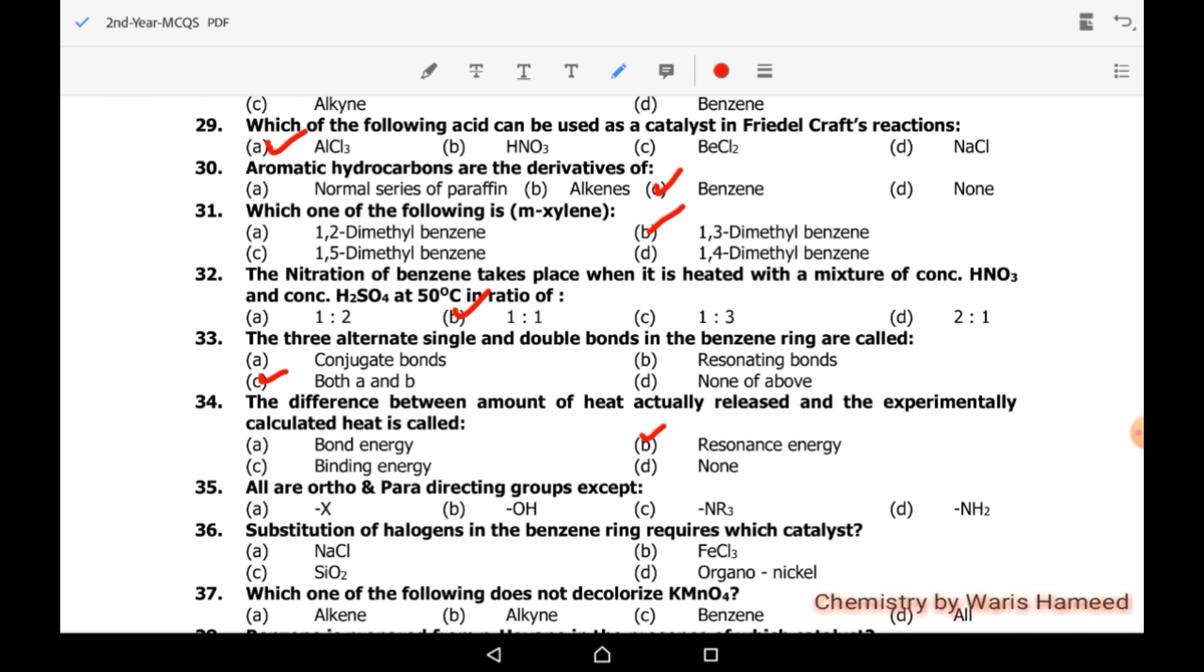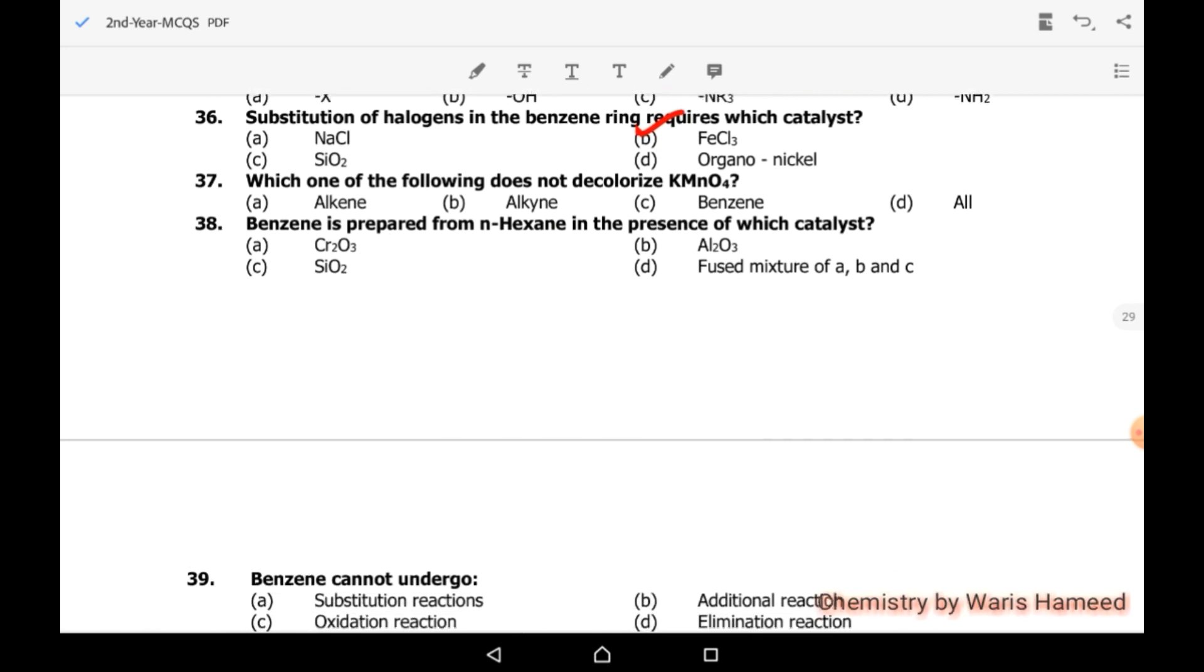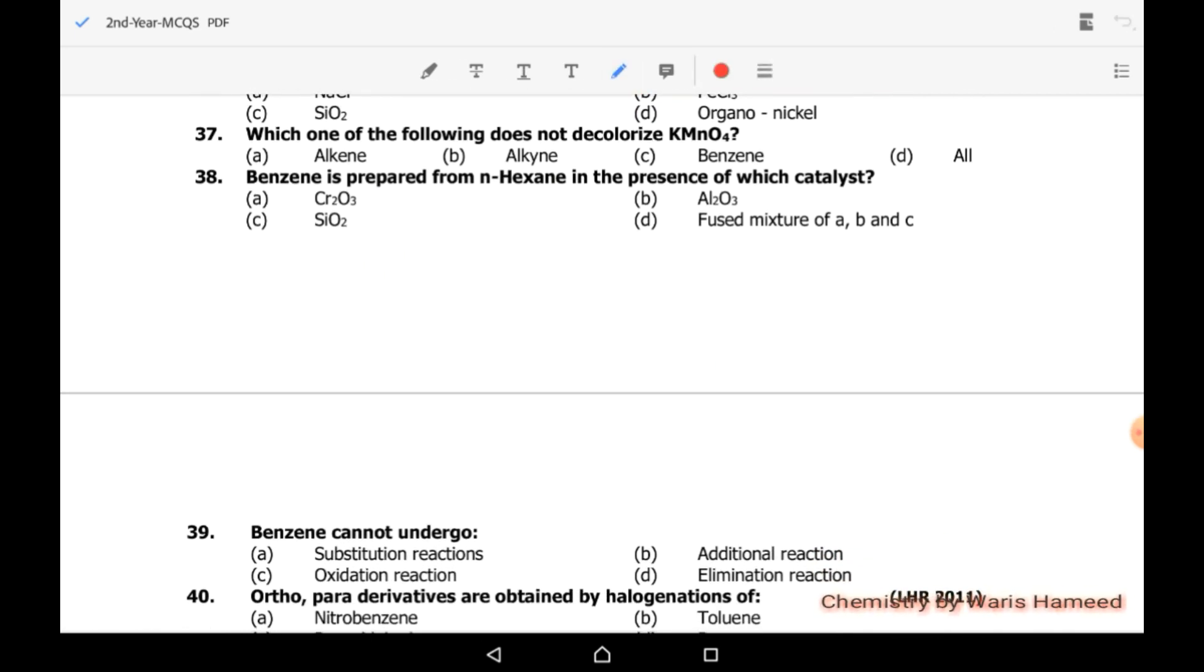All are ortho and para directing groups except NR3. NR3 is meta directing group. Substitution of halogens in the benzene ring requires which catalyst? It's FeCl3. We use FeCl3 for substitution of halogen in benzene ring. Which one of the following does not decolorize KMnO4? It's benzene. We cannot test benzene with KMnO4.